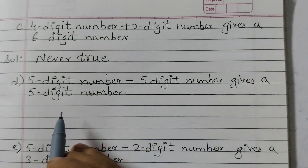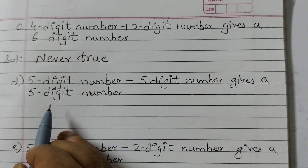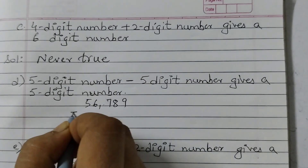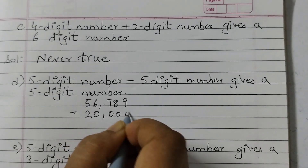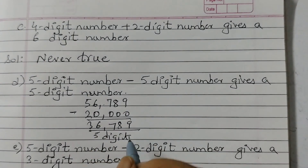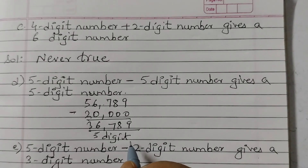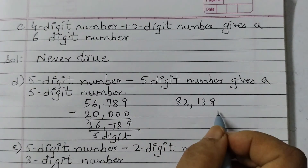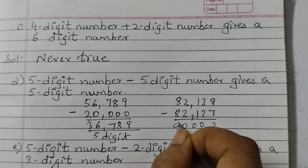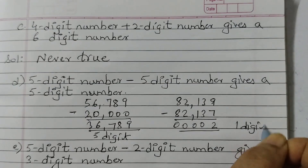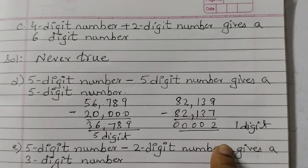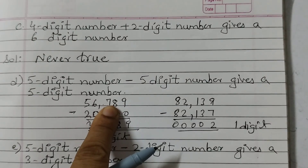D: five digit number minus five digit number gives a five digit number. Let's see some examples. Take 56,789 minus 20,000 — we get a five-digit number. But if we take 82,139 minus 82,137, we get just 2 — a one-digit number. So here we get a five-digit number and here a one-digit number; we can also get four-digit, three-digit, or two-digit numbers. This is only sometimes true.